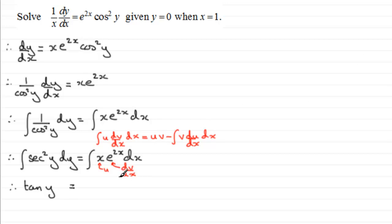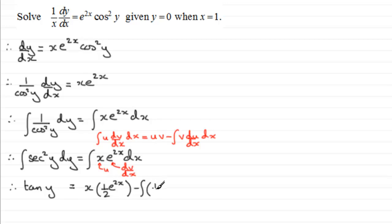I'm going to take x as u and e to the 2x as dv by dx. So when integrating x e to the 2x it's u times v, where u is x and v is the integral of e to the 2x, which is a half e to the 2x. Then we've got minus the integral of that v part — a half e to the 2x — multiplied by du by dx, which is the derivative of x, giving 1. We integrate this with respect to x, and remember there will be a constant of integration, plus c.